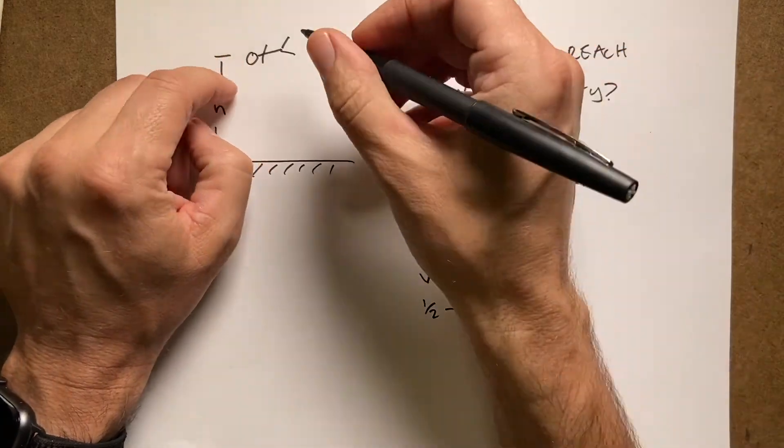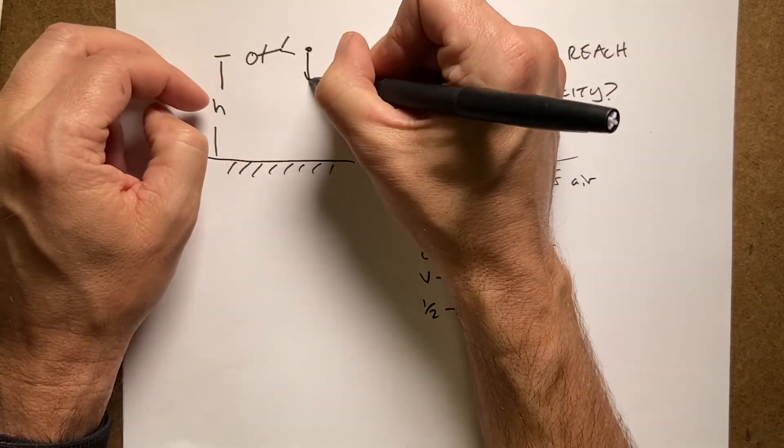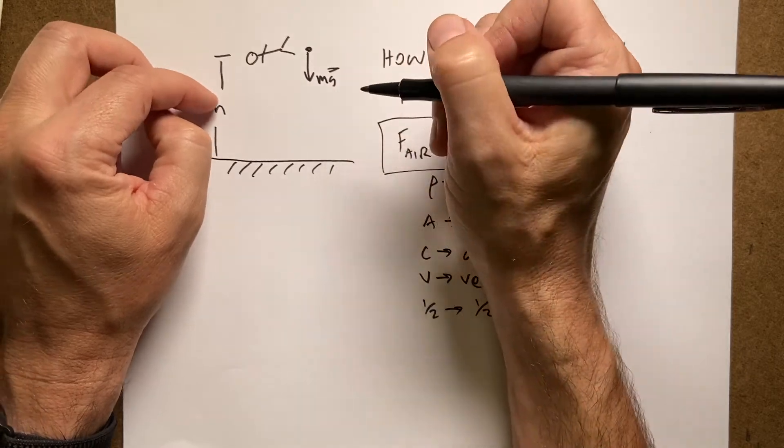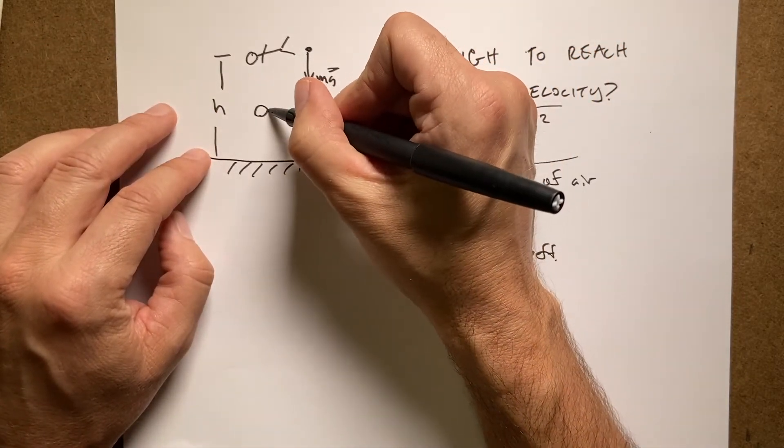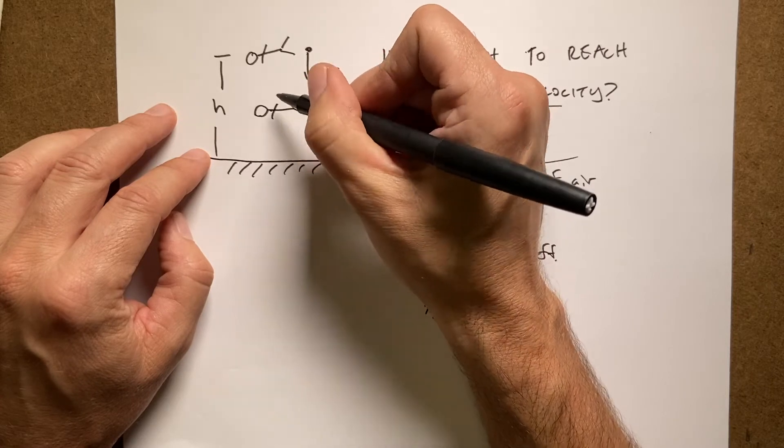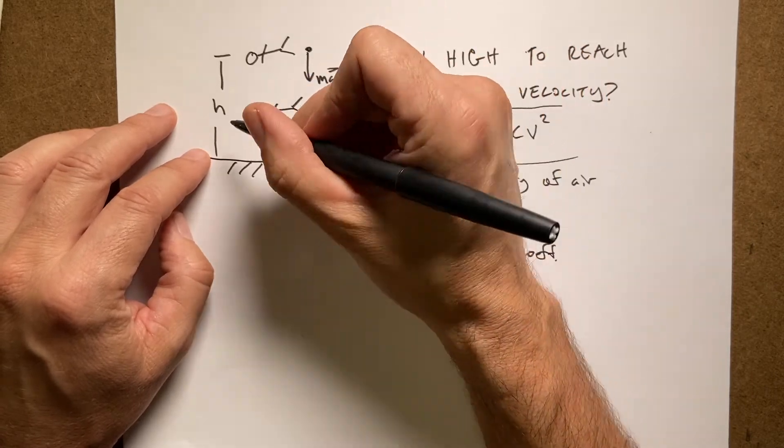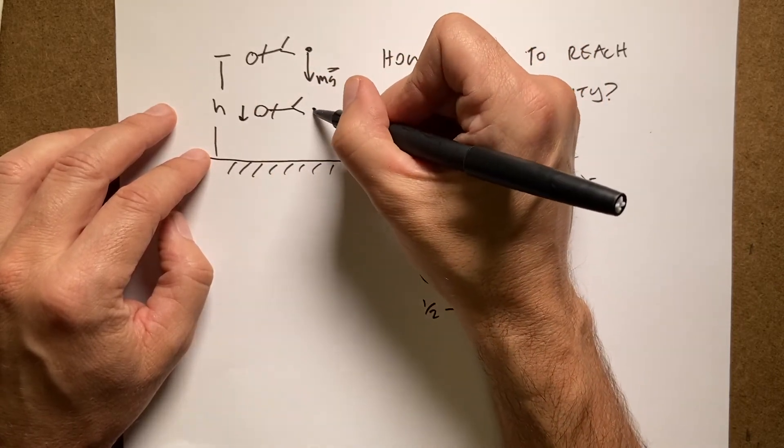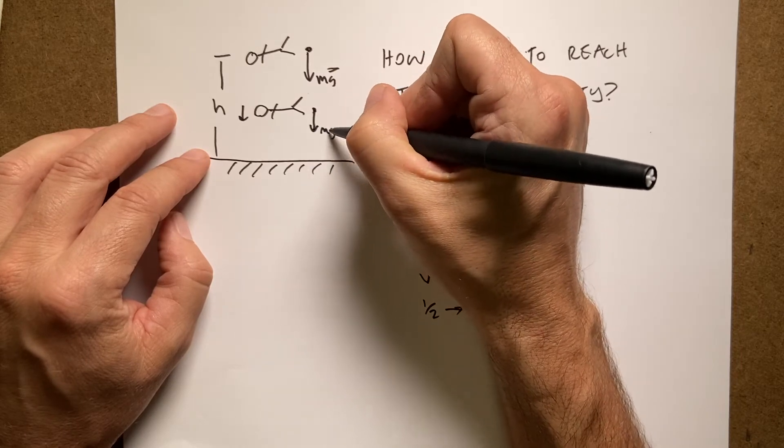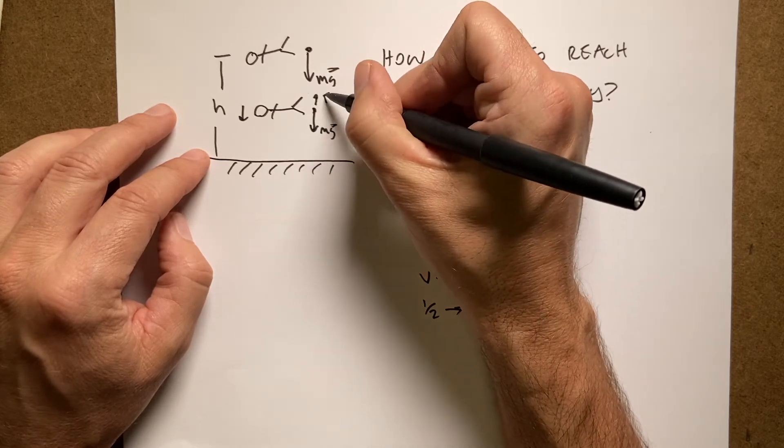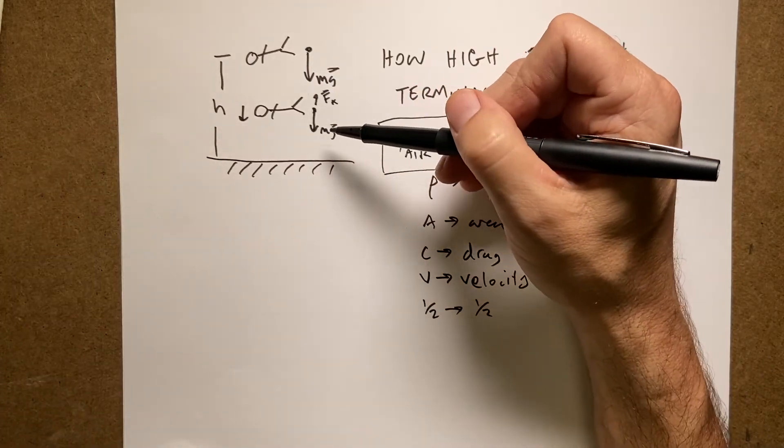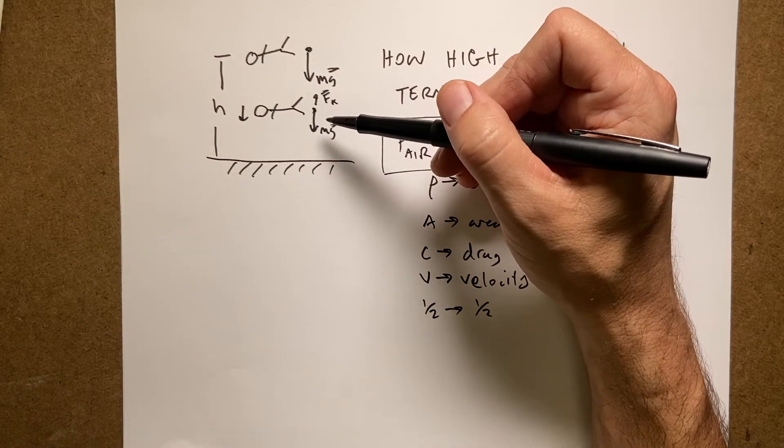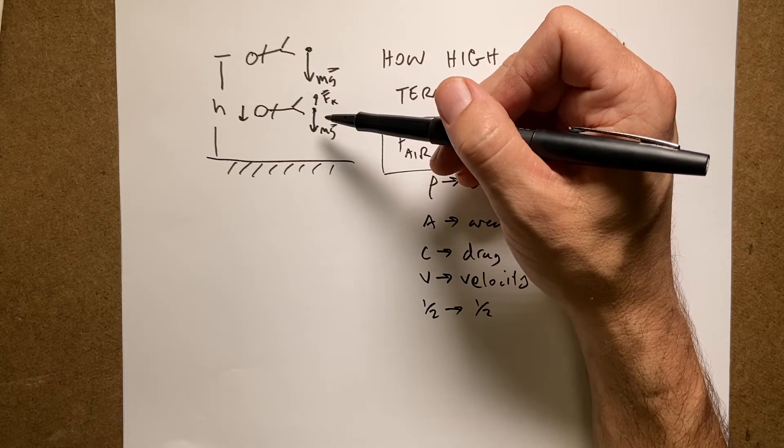So this is just a basic model for air drag. I mean, the interaction between this guy or person hitting the air is actually very complicated. But this model works fairly well. So if you imagine this, right when the person starts falling, there's just a gravitational force acting on the person. So the person speeds up.